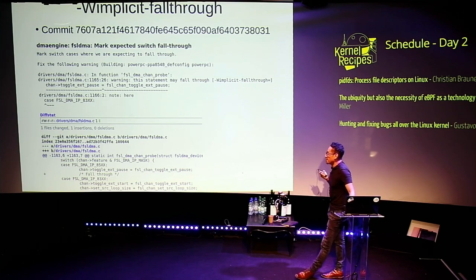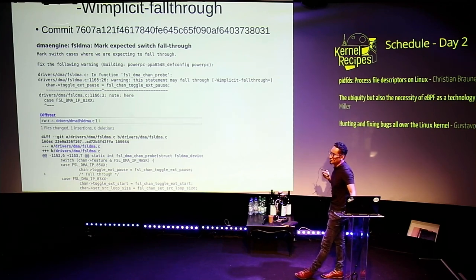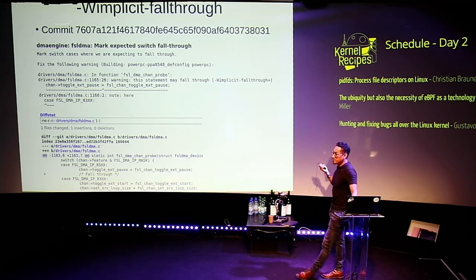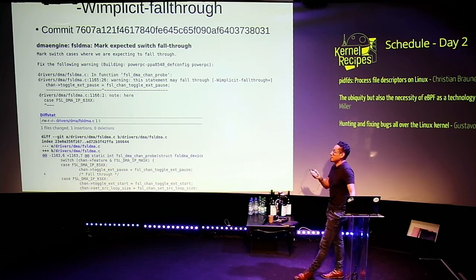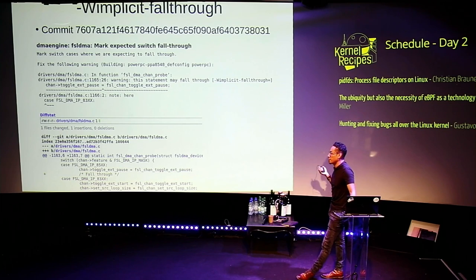The interesting part is actually determining when we're dealing with a false positive or an actual bug. At the beginning there were more than 2,000 warnings just in x86 when I started working on this — I had to audit every one of those. In many cases it was obvious the solution was to add a fall-through marking, but sometimes I was wrong and corrected by maintainers. A couple of people suggested just writing a script to place fall-through markings all across the kernel, but that would assume all those warnings are false positives, and that was not the right solution.